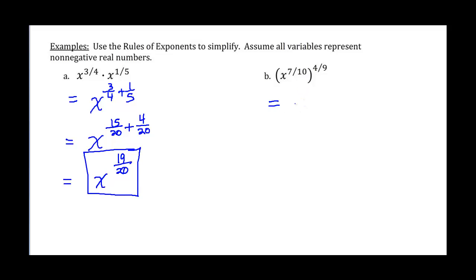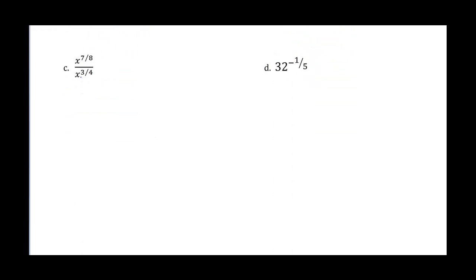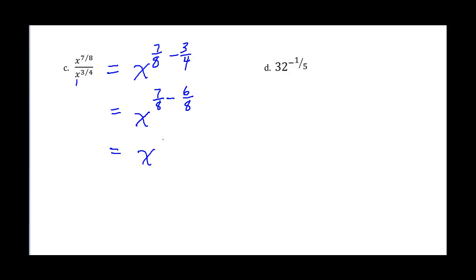Part b is raising a power to a power, so we multiply the exponents. The only factors with a common factor are 4 and 10, which share a factor of 2. So we get x to the 14 over 45. Next, we have a division example. The bases are the same, so we subtract the exponents: 7 eighths minus 3 fourths. Getting a common denominator of 8, 3 fourths becomes 6 eighths, giving us x to the 1 over 8.